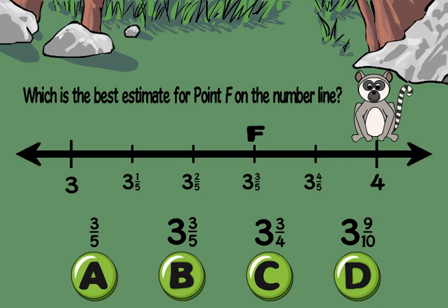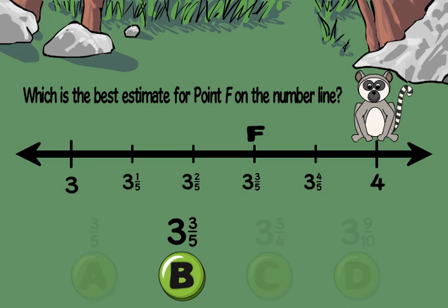I get it now. I have to see what numbers I'm between. 3 fifths past 3 is 3 and 3 fifths, so point F is at 3 and 3 fifths. Thanks!